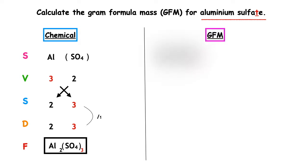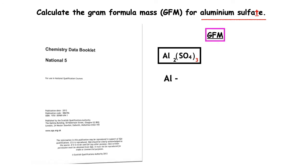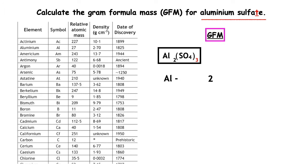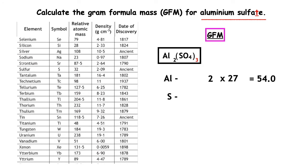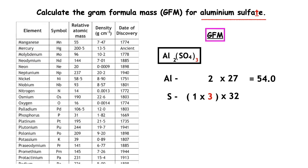Now that we've got the formula, we can work out the gram formula mass. We take down each of the elements. Aluminium: we have 2 from our formula. Using page 7, the relative atomic mass is 27. 2 times 27 equals 54. How many sulfurs do we have? We've got 1 inside the bracket multiplied by the number outside the bracket, which is 3. The relative atomic mass of sulfur is 32. 1 times 3 is 3; 3 times 32 equals 96.